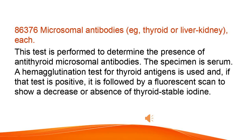Microsomal antibodies, e.g., thyroid or liver kidney, each. This test is performed to determine the presence of antithyroid-microsomal antibodies. The specimen is serum. A hemagglutination test for thyroid antigens is used and, if that test is positive, it is followed by a fluorescent scan to show a decrease or absence of thyroid-stable iodine.